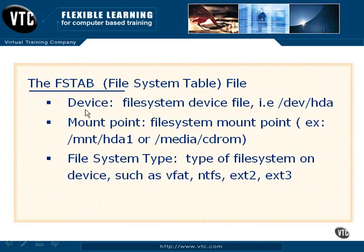The first column is the device column, which shows where the device file lives. In addition, we have a mount point. Devices basically exist as files, and in order for those files to be functional, they have to be mounted. This is the link between the device file and the mount point, showing us where we can access those particular devices through their associated files.